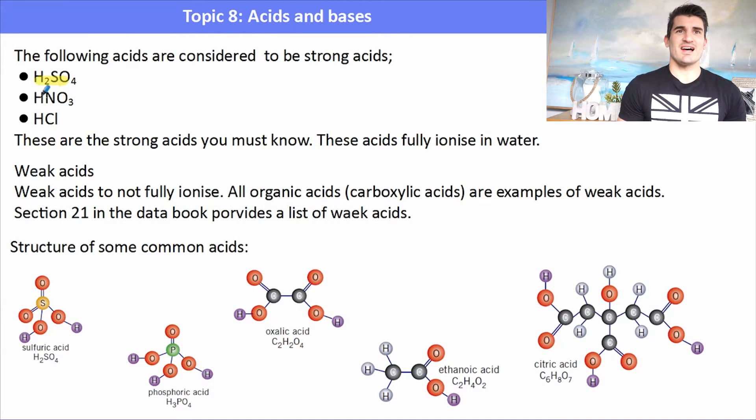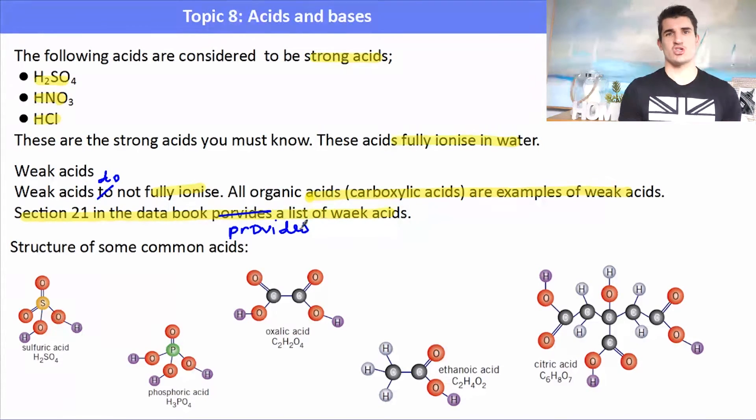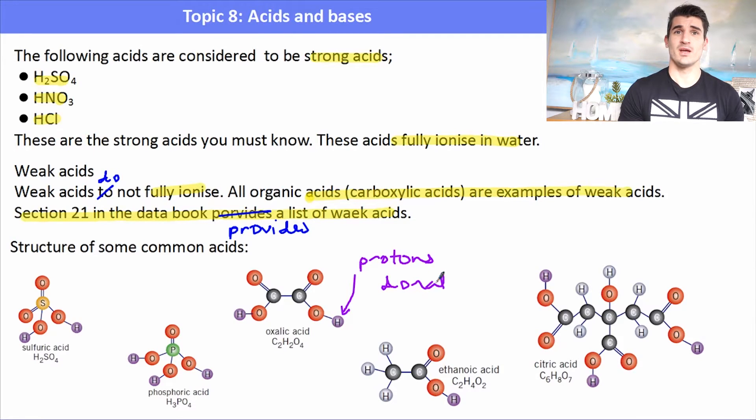The following acids are considered to be strong and you need to know and remember these ones: sulfuric, nitric, hydrochloric. Weak acids, they don't fully ionize in water and some of those or most of those contain carboxylic acids. Section 21 of the data book provides a list of all of the different types of weak acids that you would come across. There are some of the common acids which are shown below and like in one of the earlier videos, we were asked to identify the proton that would be donated in the reaction. Here, the purple protons are the protons that would be donated in an acid base reaction. You can see that the ones that contain the carboxy group, it's always the hydrogen that is part of the carboxy group.